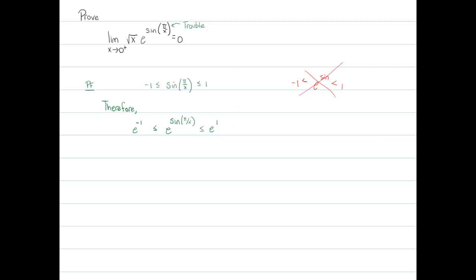Okay, but that provides a nice bound for us. And at this point, we could say, hence, I'm going to multiply all three sides by the square root of x so I can build back my entire function here. So square root of x times e to the negative one must be less than or equal to the square root of x times e to the sine of pi over x, which must therefore be less than or equal to e to the first times the square root of x.